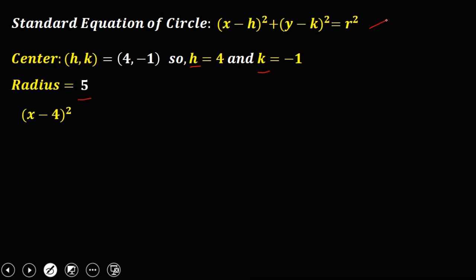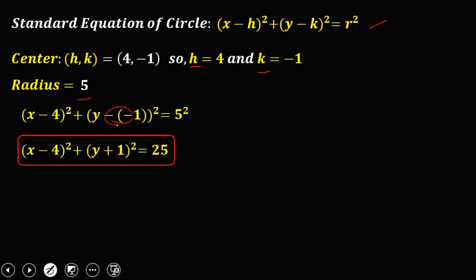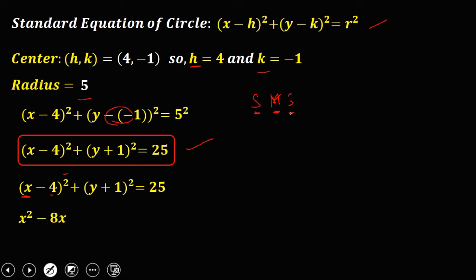So: (x minus 4) squared plus (y minus negative 1) squared equals 5 squared. The double negative becomes positive. This is now the standard equation of the circle. To find the general form, expand (x minus 4) squared using the SMS shortcut — square, multiply, square: x squared, then 2 times negative 4 gives negative 8x, then 4 squared gives 16.